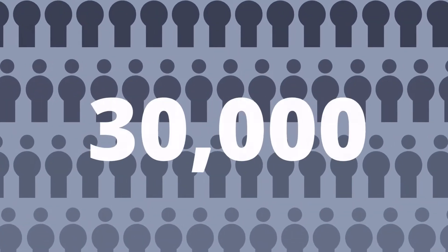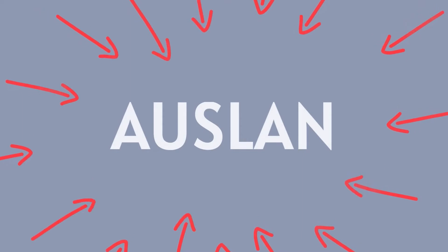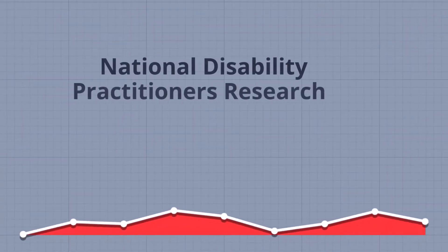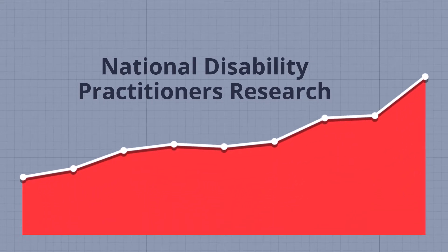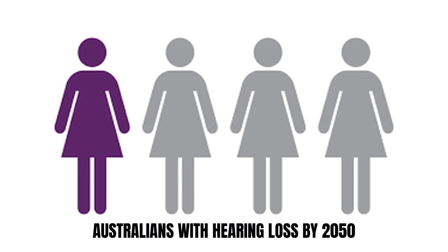Almost 30,000 people use Auslan to communicate every day, yet this uniquely Australian language remains much of a mystery. Research conducted by the National Disability Practitioners highlighted the rising cases of hearing loss in Australia. It is anticipated that by 2050, one in four Australians would be affected with speaking or hearing problems.